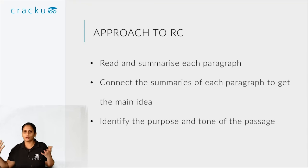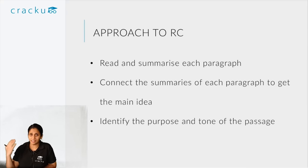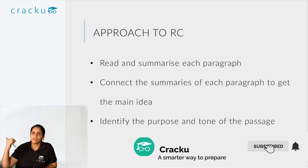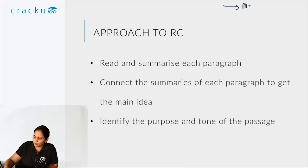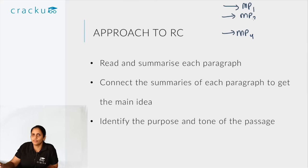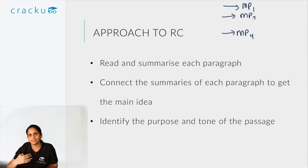The first thing you should do is determine your approach to RC. As we have said through many of our videos, the first step when you read through the RC is to write down a one-line main point for each paragraph. Once you have written down the main point of paragraphs one, two, three, and so on, you will have four or five main points. Passages are generally smaller in the recent CAT.